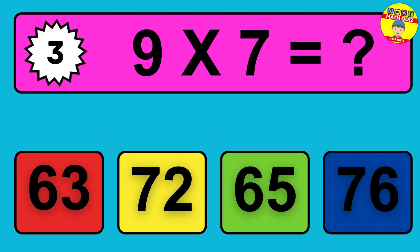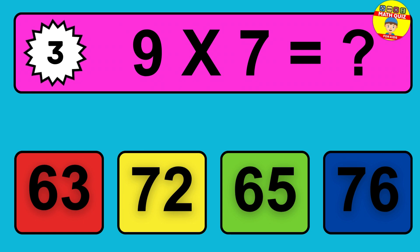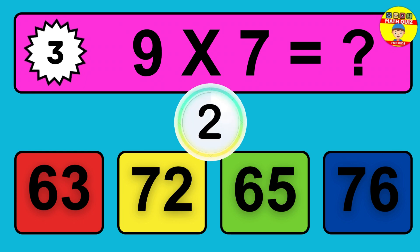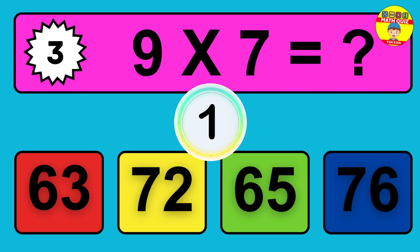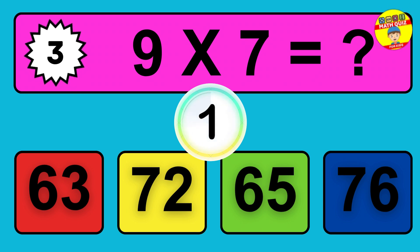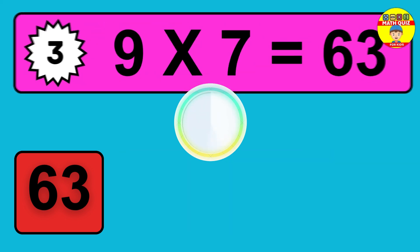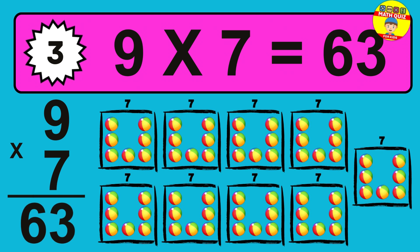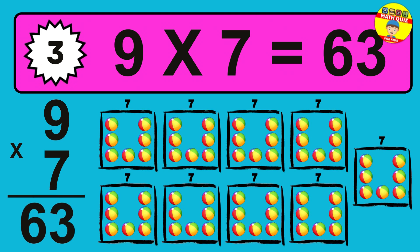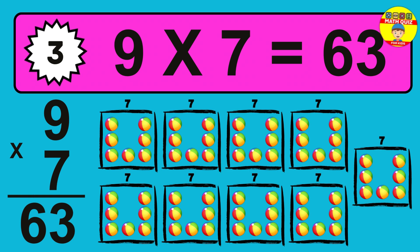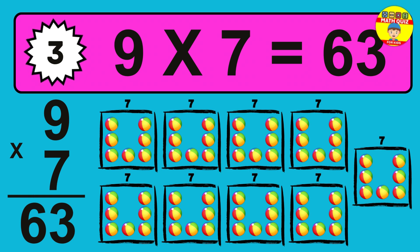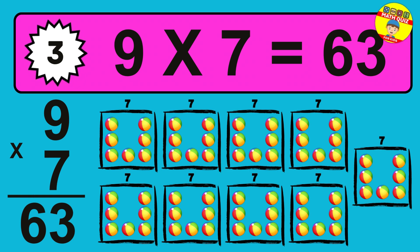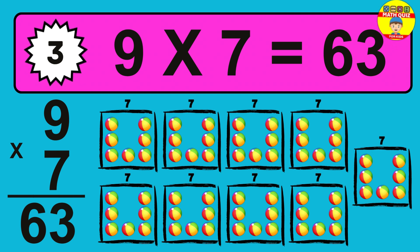Question 3. 9 times 7 equals what? So the answer is 9 times 7 is 63. To calculate, we have 9 groups with 7 balls each one. So how many balls do we have? 63 balls.